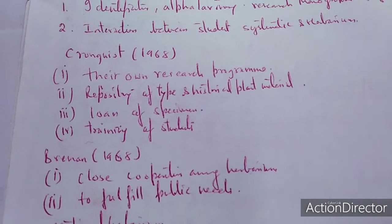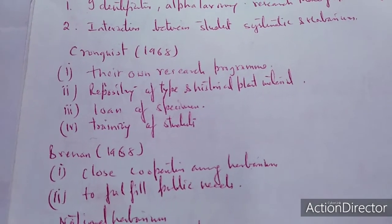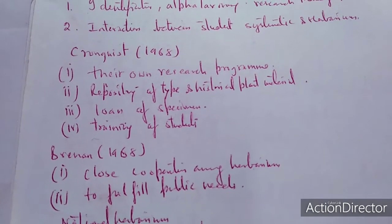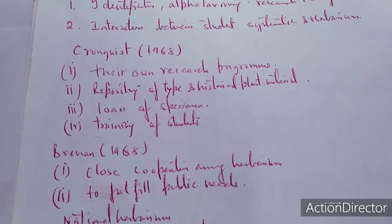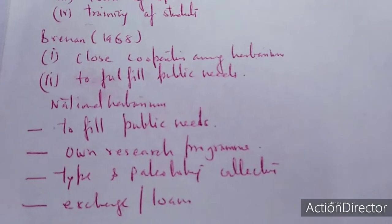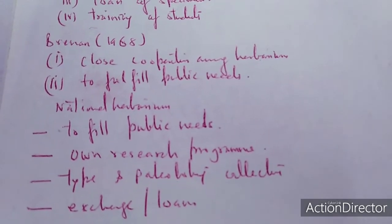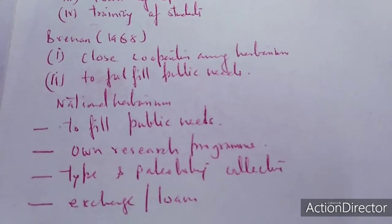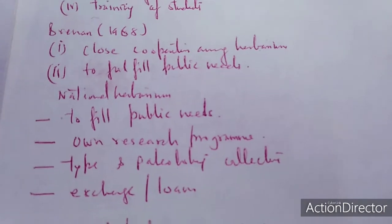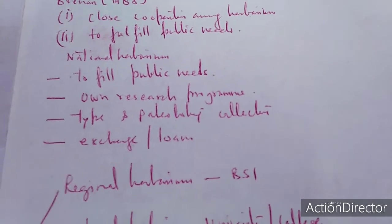The loan of specimens should be given, as suggested by Concrast in 1968, and training of students is a very important part. Without this training, we cannot go for the new generation to increase and stimulate them into plant sciences. Brennan also worked on the same functions of the herbarium. He suggested that close cooperation is required among herbariums to avoid duplication and to fulfill the public need, because herbarium is usually established by public fund. The motto of the national herbarium is to fulfill the public need.